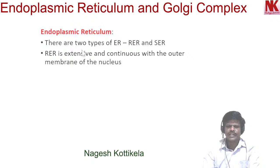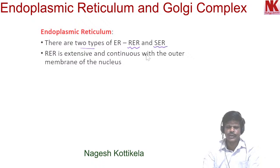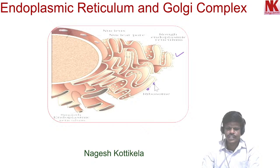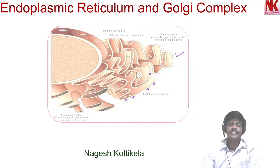Endoplasmic reticulum is of two types: rough endoplasmic reticulum and smooth endoplasmic reticulum. You can see in this picture this part is rough endoplasmic reticulum. Ribosomes are attached to the surface of this endoplasmic reticulum, so it has a rough surface. When observed under a microscope, its surface is rough. The other type is smooth endoplasmic reticulum.